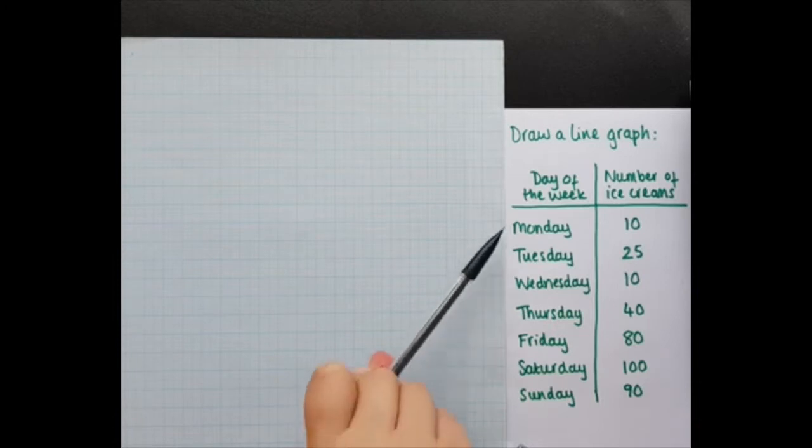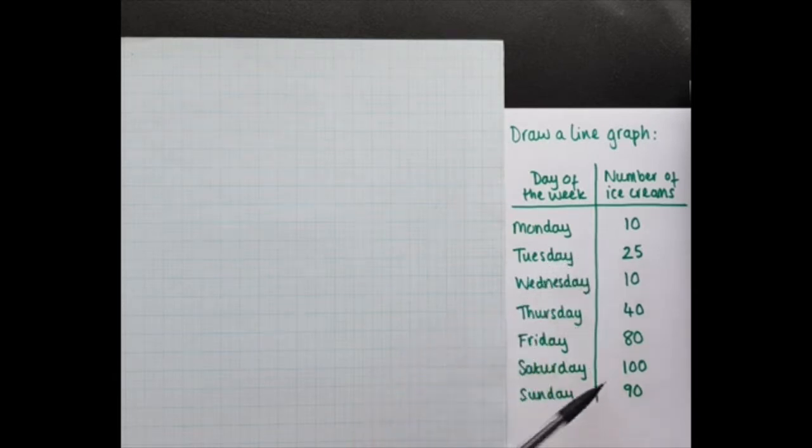So we've got data that changes over time because Monday, Tuesday, Wednesday, Thursday, Friday, Saturday, Sunday is time series data because it's dates. And then we've got our numerical data as well. So line graphs for this type of data.